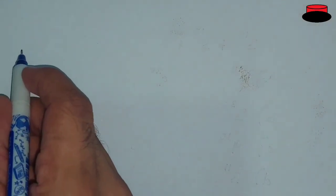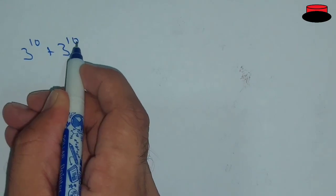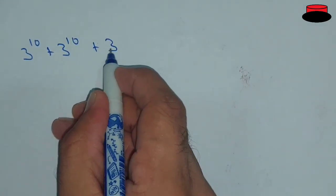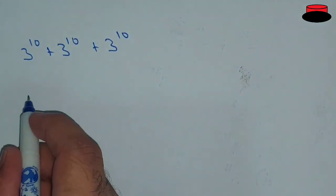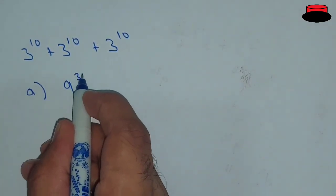Hello, what's up guys, welcome to the new video. In this video, we're going to learn about this question. This is a multiple choice question: 3^10 + 3^10 + 3^10. We have four options over here.